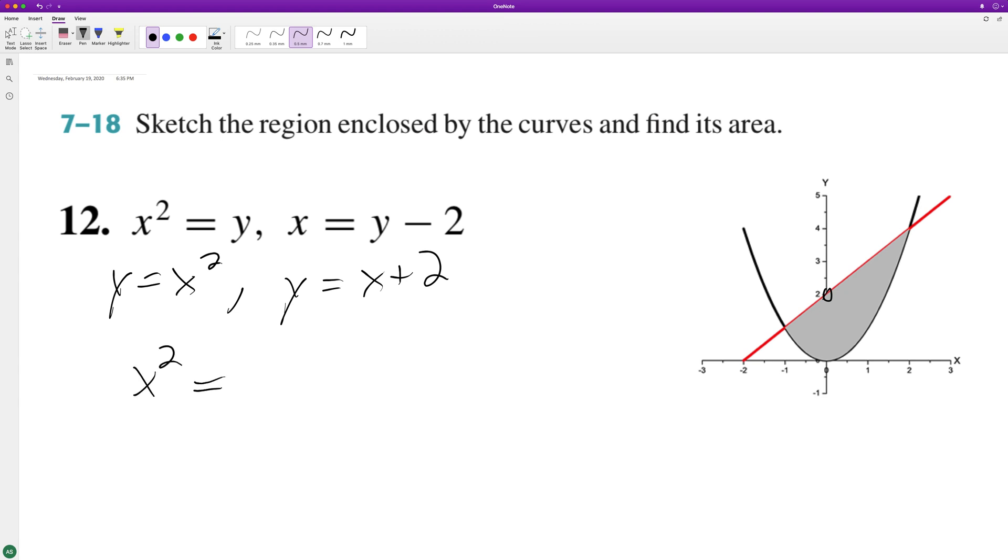All we do is set x squared equal to x plus 2 where they match up. So x squared minus x minus 2 equals 0. Factoring gives us (x minus 2)(x plus 1), which means negative 1 and 2 are our endpoints.